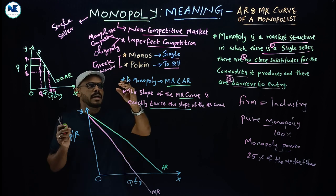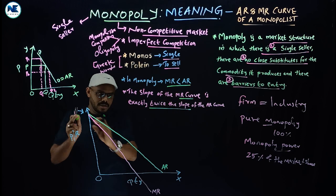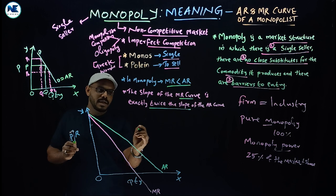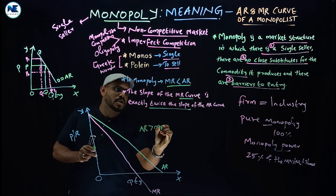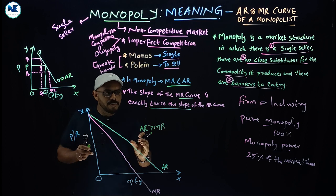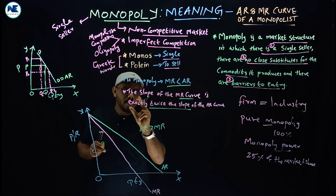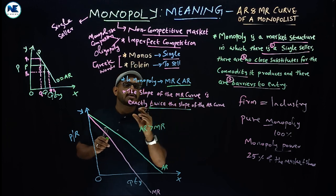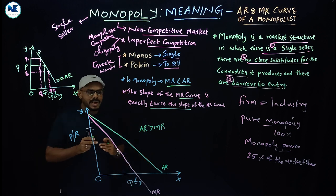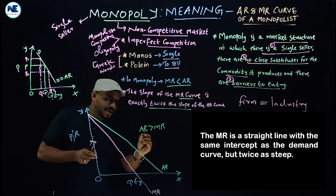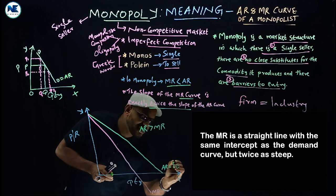Marginal revenue is always less than average revenue — this is very important. In this figure we can see that average revenue is greater than the marginal revenue curve, and the marginal revenue curve is less than the average revenue curve. Another key point is that the slope of the marginal revenue curve is exactly twice the slope of the average revenue curve. We also know that average revenue is equal to the demand curve.